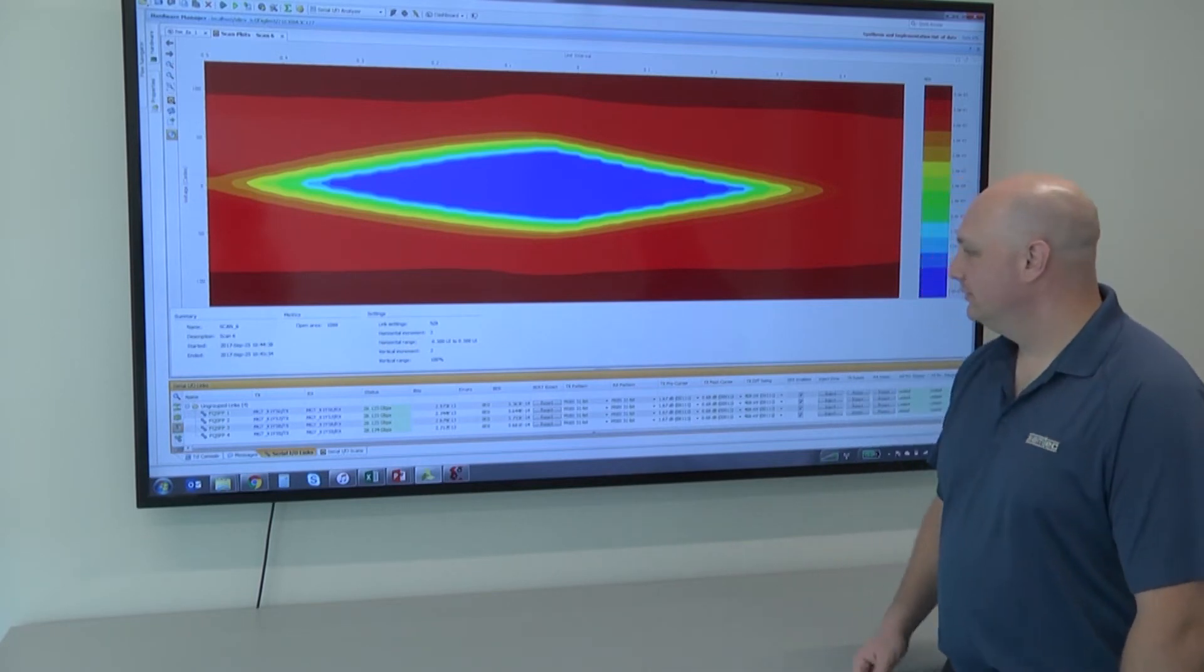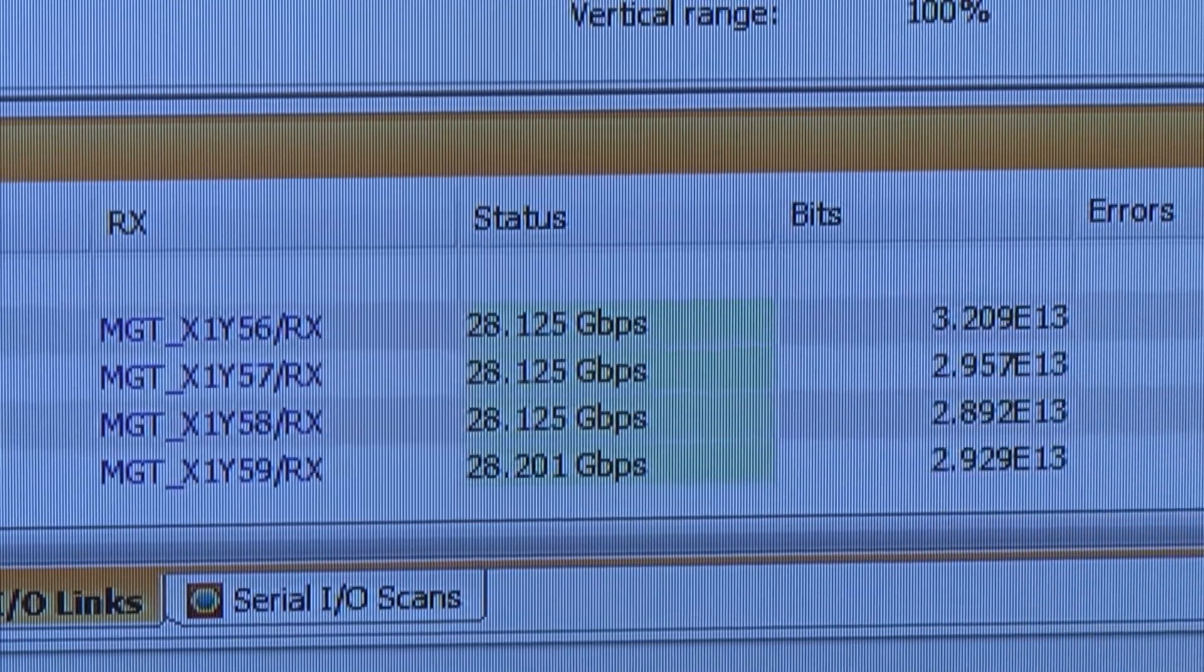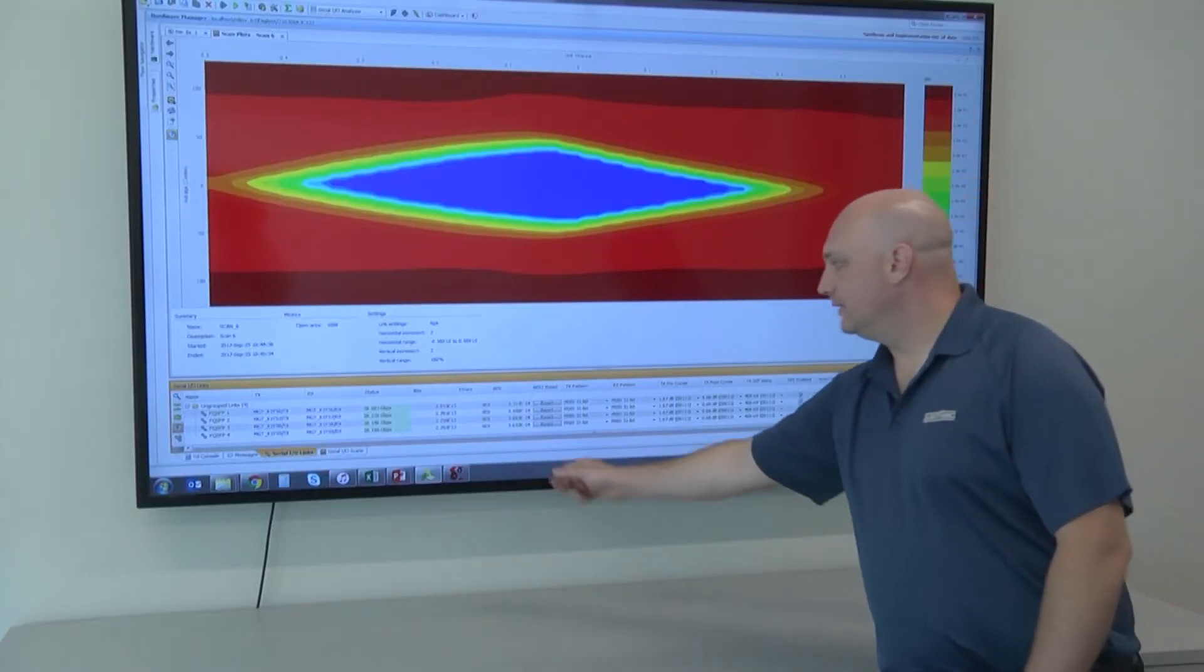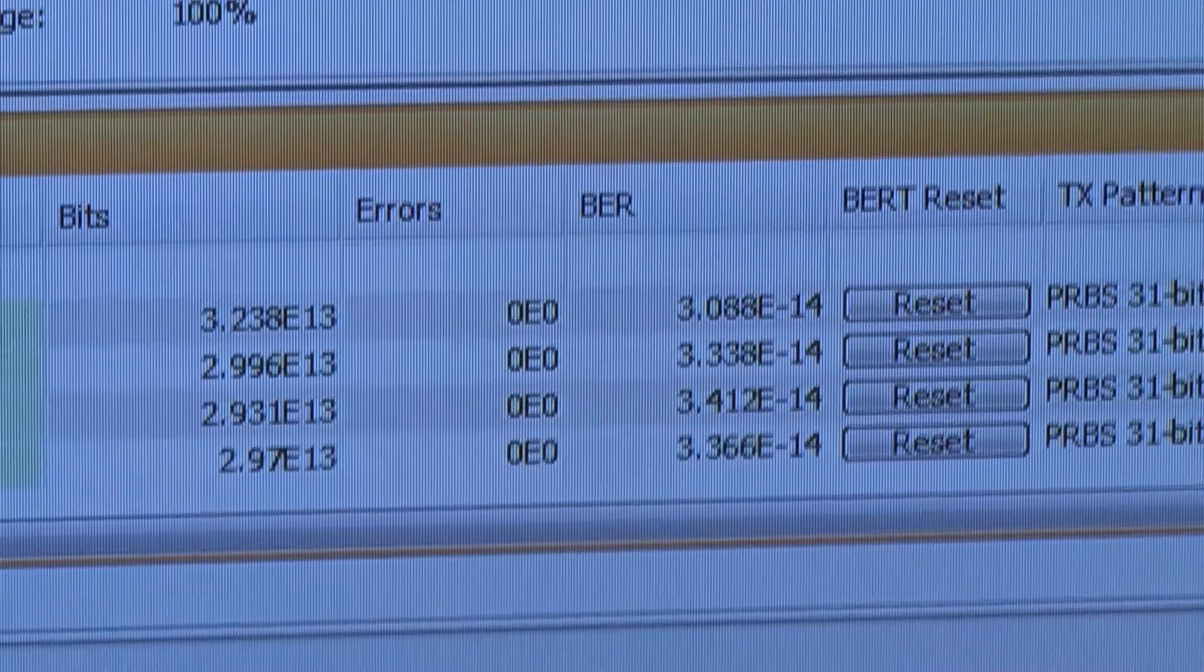Here's the test in motion. As you can see each lane is running at 28 gigabits per second. Here we have the number of bits running through of course and the bit error rate. We're at roughly three times ten to the minus fourteen right now.